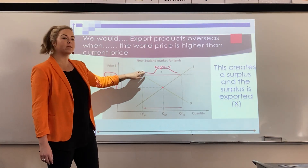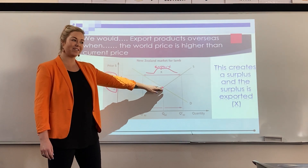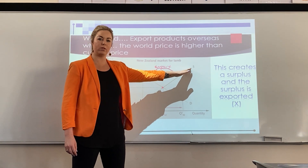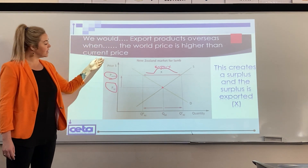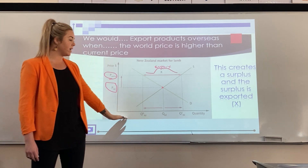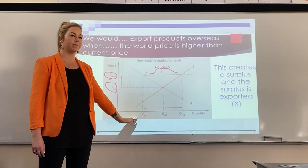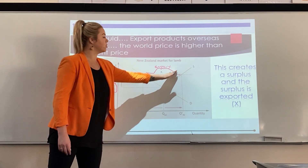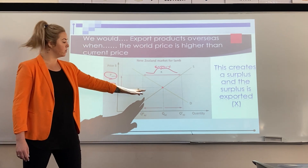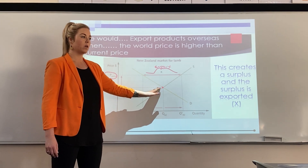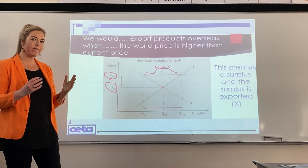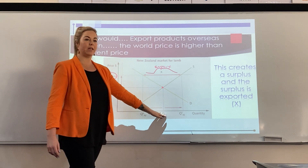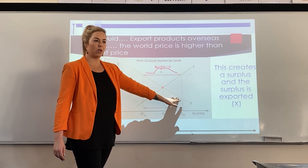To recap: demand shows us what a consumer requires, and supply relates to what producers are providing. On the y-axis we always have price, and on the x-axis we have quantity. When we read the graph, we start by looking at the two curves, and where they intersect is called our equilibrium.